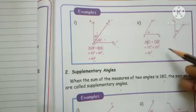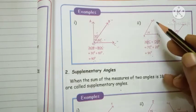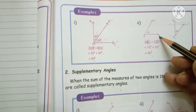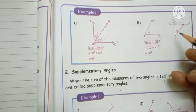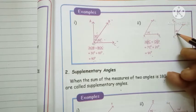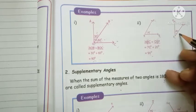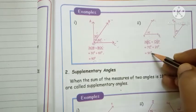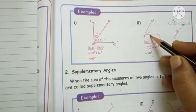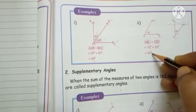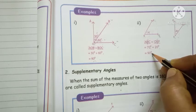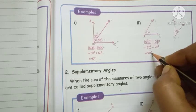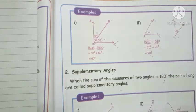Another example: angle ABC is seventy degrees and angle DEF is twenty degrees. Join them together and you get a complementary angle. Seventy degrees plus twenty degrees equals ninety degrees. When you get ninety degrees, that is called a right angle — or complementary angle.